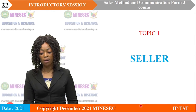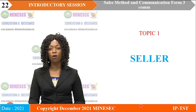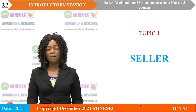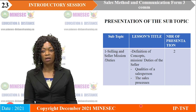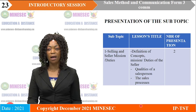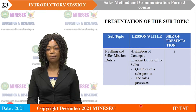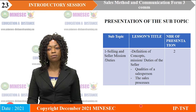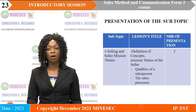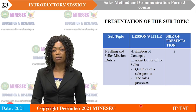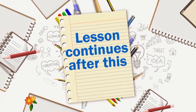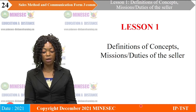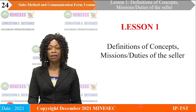So that is it for the objectives of the syllabus. The first topic we have is the seller — presentation of the subtopic: selling and seller mission and duties. The lesson will cover the definition of concepts, mission and duties of the seller, qualities of a salesperson, and the sales processes. We are going to see all this in two presentations. Let's start with our first lesson — the definition of concept: selling, the seller, the mission of the salesperson, and duties of the seller.